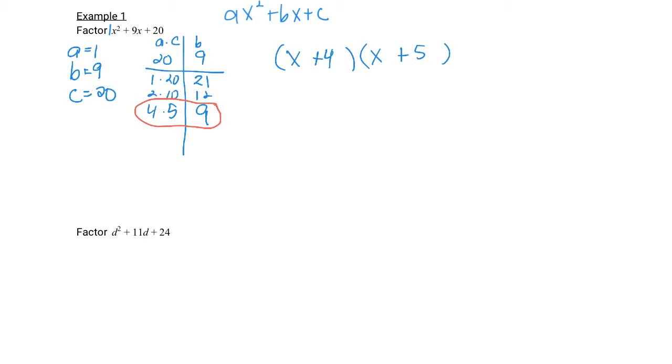If we want to check and see if this is correct, we use the FOIL method to multiply it back out. x times x is x². x times 5 is plus 5x. 4 times x is plus 4x. 5 times 4 is plus 20. Combine like terms in the middle. We get x² + 9x + 20. Looks the same as that one. Hooray, we did it.